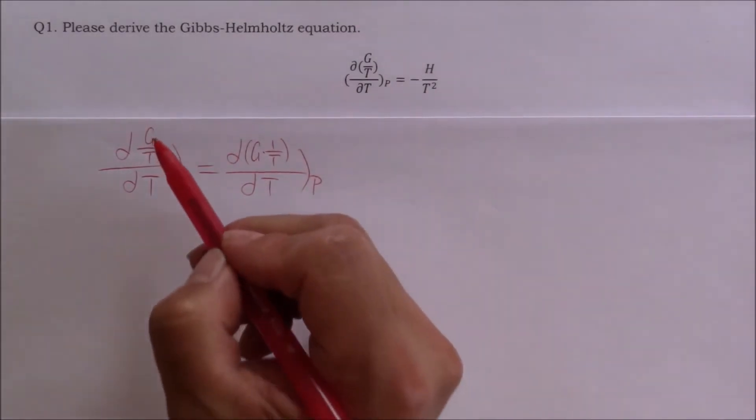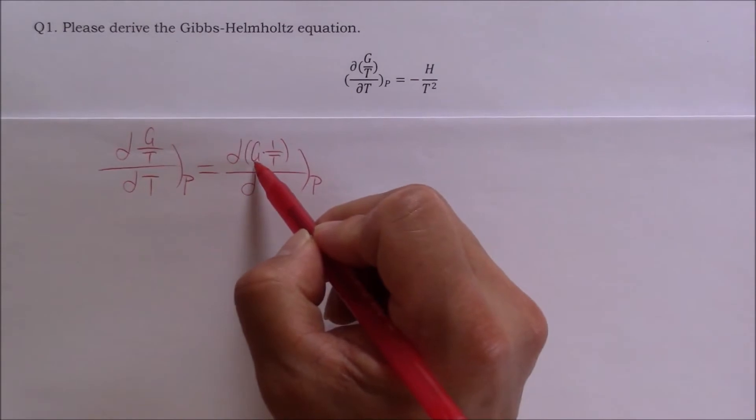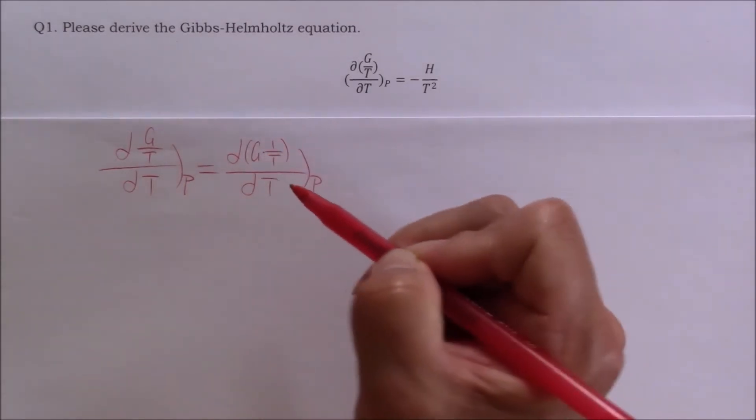First, I rewrite g over T as the product between g and 1 over T, because we know the partial derivative of a product between two variables.